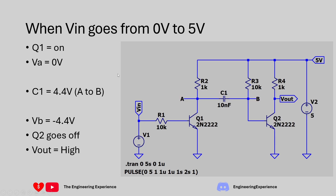Now let's look at what happens when VIN steps from 0 to 5 volts. Q1 goes into saturation, acting like a small resistor connecting collector to emitter. The capacitor, which had 4.4 volts across it, now has its A-side connected to ground through Q1. This takes the base of Q2 down to minus 4.4 volts, meaning 9.4 volts appears across resistor R3. We now have a conduction path through R3 and C1, so R3 is charging C1.